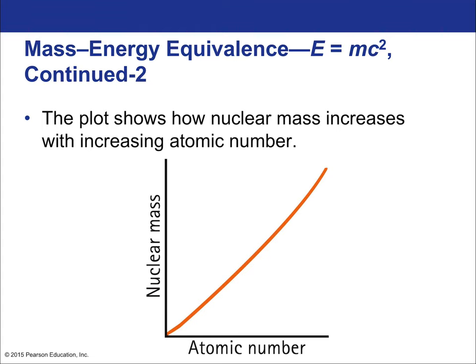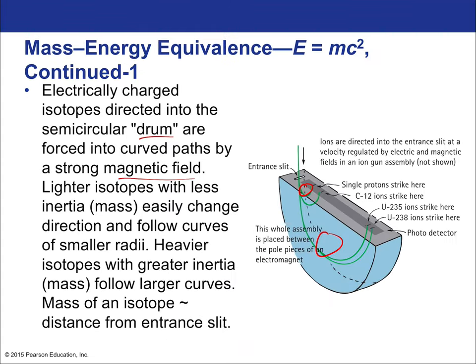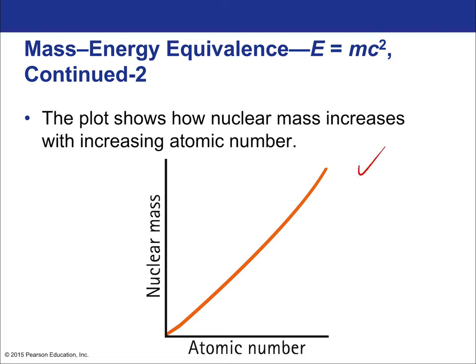A plot of nuclear masses shows how they increase with atomic number — fairly linearly at first, then becoming steeper past elements like mercury and gold because of the extra neutrons per proton that heavier elements carry. The mass per nucleon does not remain constant across the periodic table — it varies quite dramatically, revealing important information about where energy can be extracted through nuclear reactions.